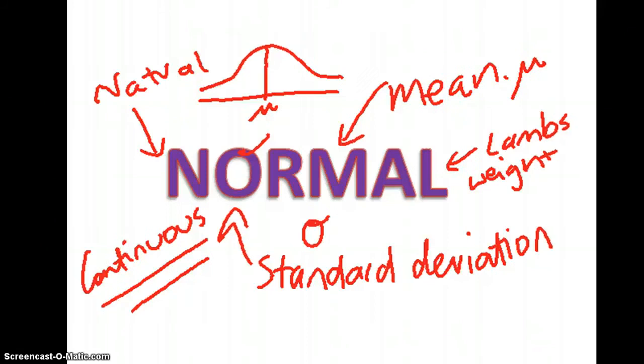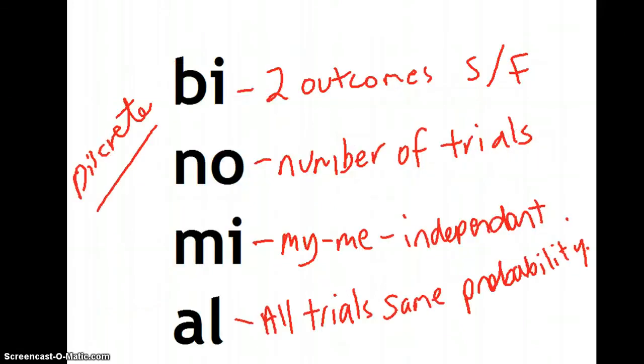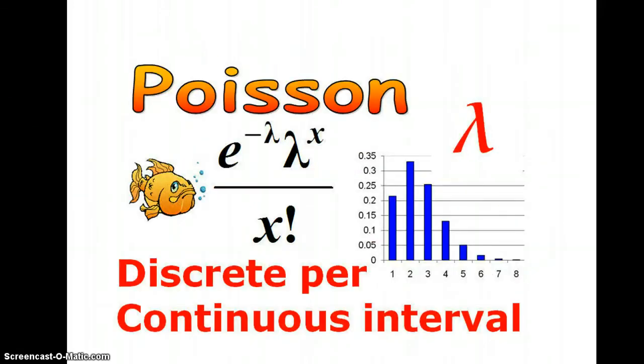So there's your memory trick. Normal, binomial or Poisson. So you need to know the conditions of each so that you can pick what distribution to use in each question.